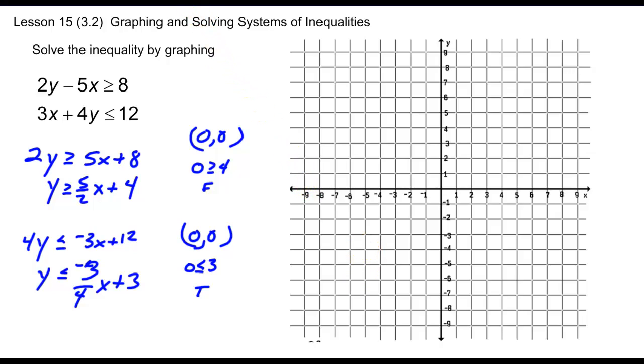Let's start with the first one. We'll graph this by going up to 4, going up 5, over 2, solid line because it's equal to. Sample point of 0, 0 yielded a false answer, therefore we shade to the opposite side.